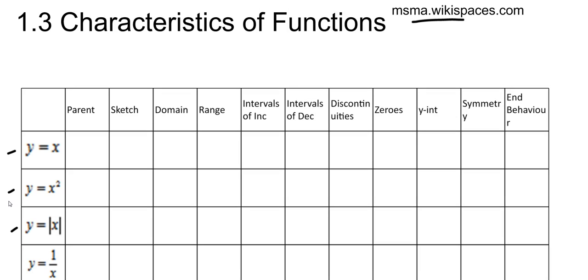Y equals x. So y equals x is the parent function of the line. The parent function is the most basic version of whatever it is. So the most basic line that we can get is y equals x because it passes through 0, 0. It's got a y-intercept of 0 and a slope of 1. So it's very basic.